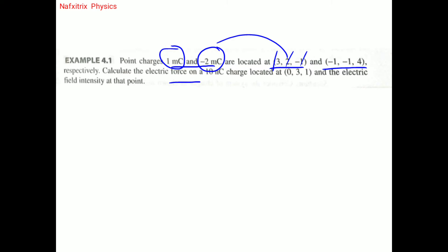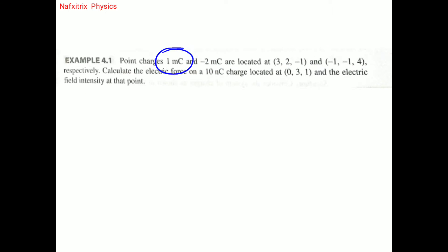We need to calculate the electric force on a 10 nanocoulomb charge located at (0, 3, 1) and the electric field intensity at that point — that is, how much force the 1 millicoulomb and minus 2 millicoulomb charges exert on this 10 nanocoulomb charge.